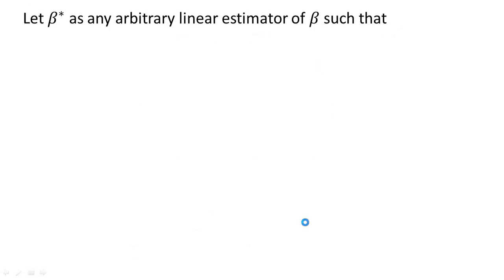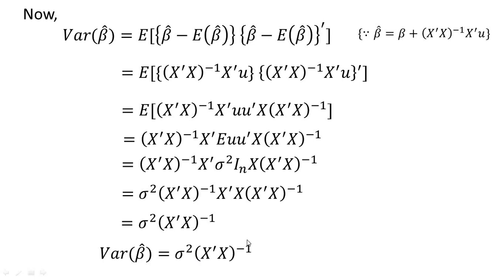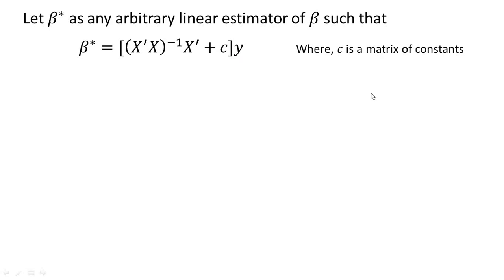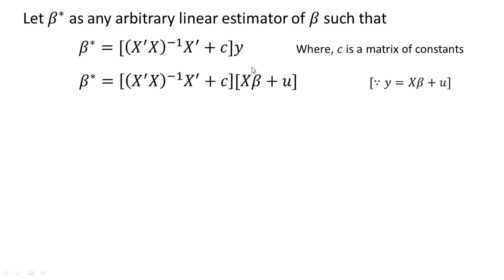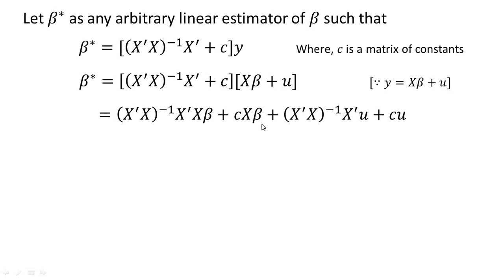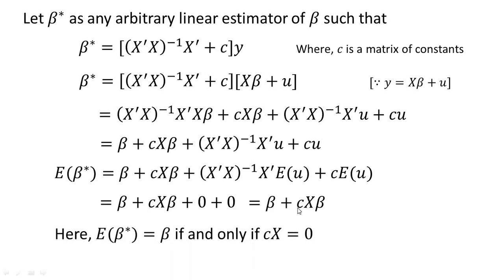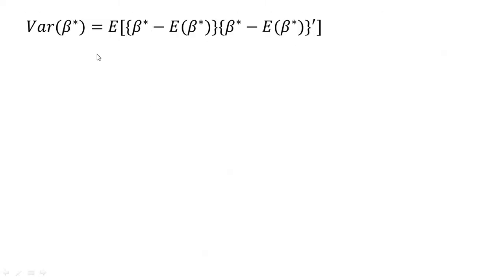We now prove that the variance of β̂ is minimum. We take β* as any arbitrary linear estimator of β, such that β* = [(X'X)⁻¹X' + C]y, where C is a matrix of constants. Substituting y = Xβ + u and simplifying, we get E(β*) = β + CXβ. Therefore, E(β*) = β if and only if CX = 0, and β* − β = (X'X)⁻¹X'u + Cu.